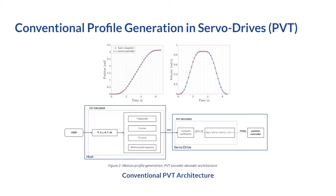In the PVT encoder, you have to provide the algorithm to create a trajectory. This can have different types like trapezoidal, which is the simplest one, S curve, ST curve, and other types like minimum jerk trajectories. Once that's done, you need to send all the points to the servo drive one by one. The servo drive has a unit called a PVT decoder that interpolates between all these points using a mathematical function of order three or four that connects the points together.